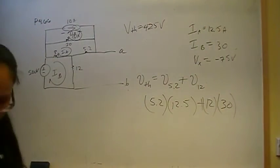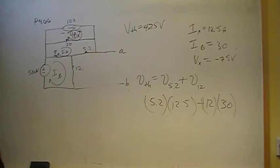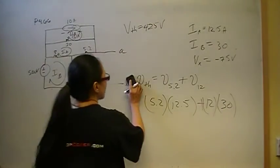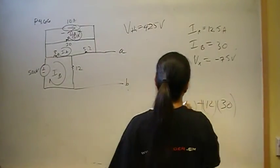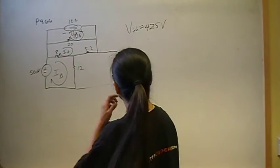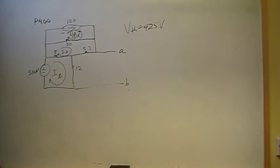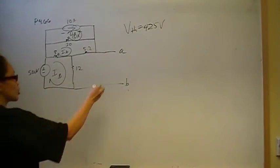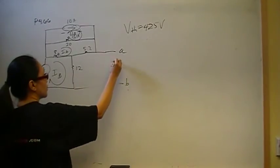Alright, so that's one half of it. The second half of it is to find the second half of the Thevenin equivalent circuit, the R-Thevenin. We have two ways to find R-Thevenin. We can short the load, find I short circuit, right?